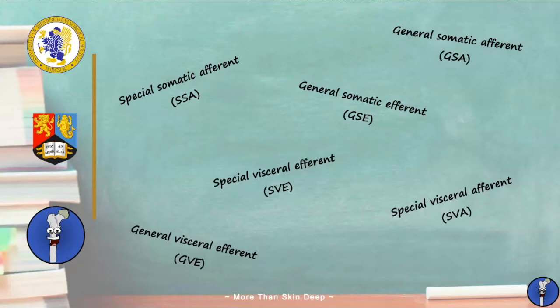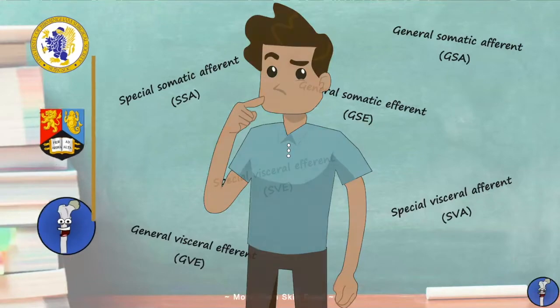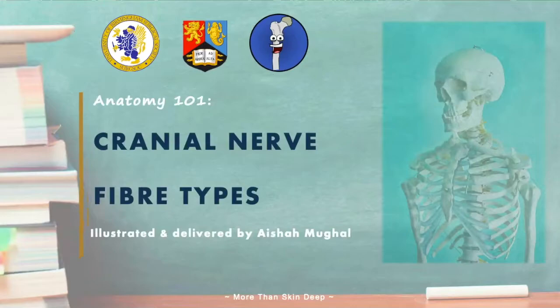As a medical student, learning the modality of each nerve's fiber type can seem totally overwhelming and difficult at times, but it's important you grasp these concepts now before you study the 12 cranial nerves in depth. In this session, we'll be covering the basics of nerve fiber types in relation to cranial nerves. We'll then apply our knowledge to a few examples at the end. My name's Aisha and welcome to Anatomy 101.